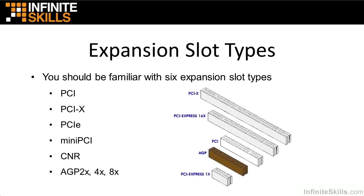Most PCI slots, regardless of the type, tend to be white — you'll see these white or light gray slots all over motherboards. AGP slots, which are graphics slots, are generally brown. You can't always go strictly by color since you'll see blue, red, and other colors, but you can also look at the patterns on the slots to identify them.